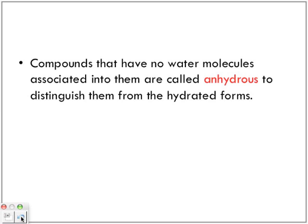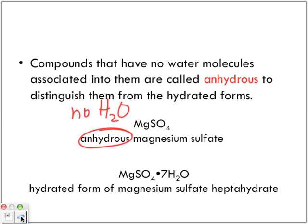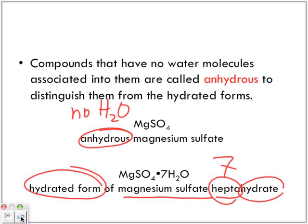Compounds that have no water molecules associated into them are called anhydrous to distinguish them from the hydrated form. You have your regular ionic and then you have your hydrated ones. Magnesium sulfate means anhydrous magnesium sulfate - there is no water associated with these molecules. But when we have MgSO4·7H2O, we have the hydrated form, magnesium sulfate heptahydrate.